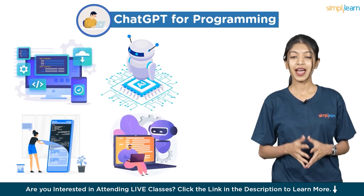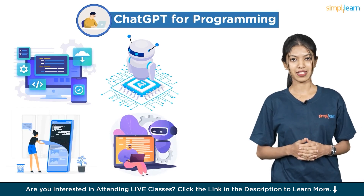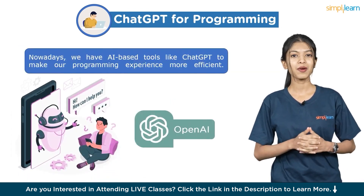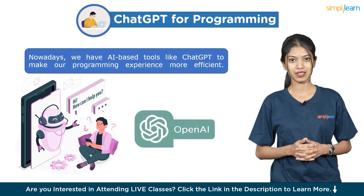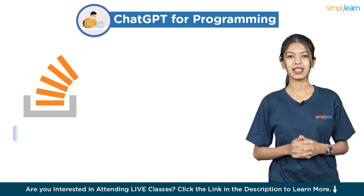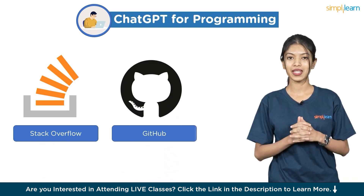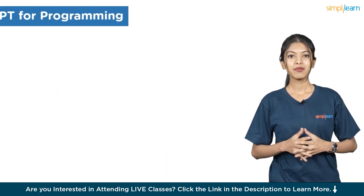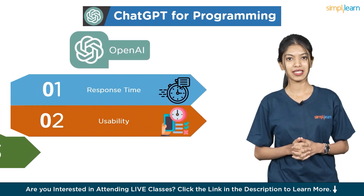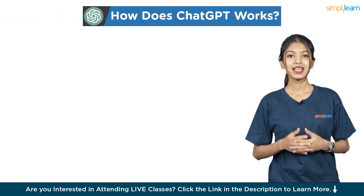So how can a programmer achieve maximum code efficiency? Nowadays we have AI-based tools like ChatGPT to make our programming experience more efficient. Although there are several coding resources and platforms such as Stack Overflow and GitHub where programmers can find solutions to technical questions, ChatGPT stands out because of its quick response time, usability, and support for numerous languages, among many other benefits.